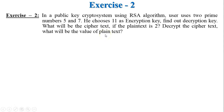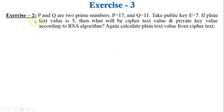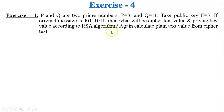Write your answer in the comment section. Exercise number three: p equals 17, q equals 11, public key e equals 7, and plaintext is 5. Find the ciphertext C and private key d, then calculate the plaintext back from the ciphertext.